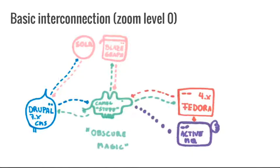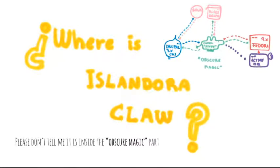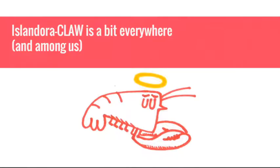If we do like a level zero zoom on how these things interconnect, we have Drupal sending stuff directly to Solar and using Solar directly for searches. We have Drupal sending stuff to this Kamel component and getting also data back. We have Kamel interacting with the triple store. We have Kamel interacting with Fedora. And also Kamel listening to active MQ. And even when this is a very simple diagram, basically stating what moves from where to where, we still have this obscure magic part. The big question is, where is Alan Dora Claw in this diagram?